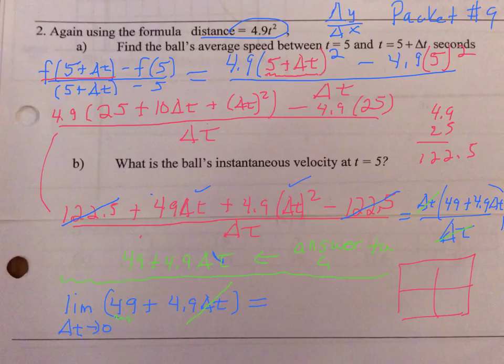The 49, however, the delta t going to zero doesn't affect that 49 at all. So our limit is 49. So at t equals 5, the ball's instantaneous velocity is 49. I'll see you next time.